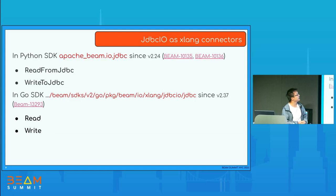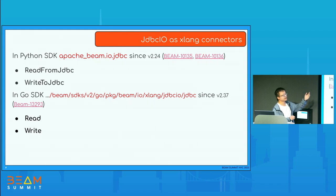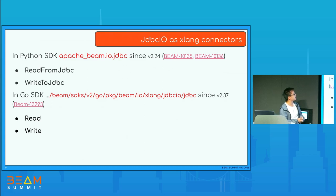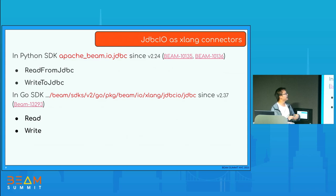In the Python SDK, the JDBC transform is a cross-language transform that calls the Java SDK under the hood. It was first implemented in 2.24. In Python, we use class names like ReadFromJdbc and WriteToJdbc — similar to ReadFromBigQuery and WriteToBigQuery — following the language naming convention. The Go SDK is even more recent, added in 2.37 last year, and also adds read and write transforms. In summary, Java has the native implementation for JDBC IO, which is then ported to Python and Go through the cross-language framework.